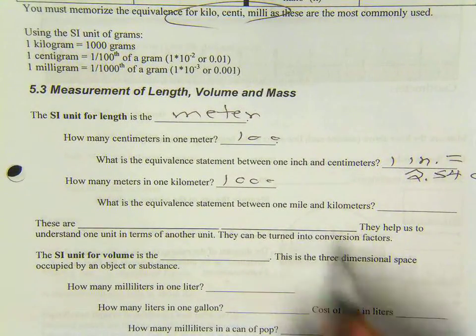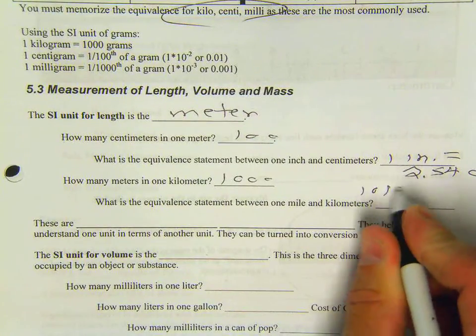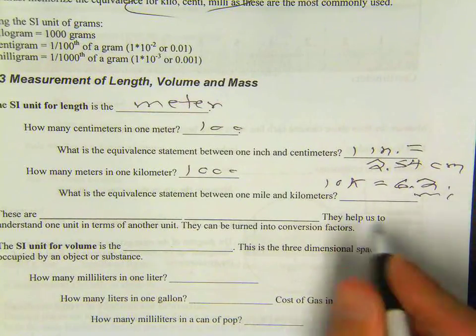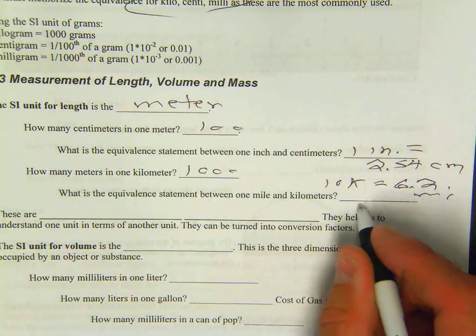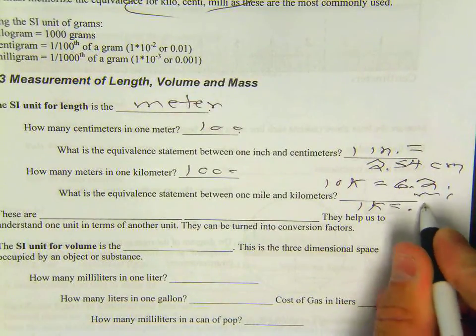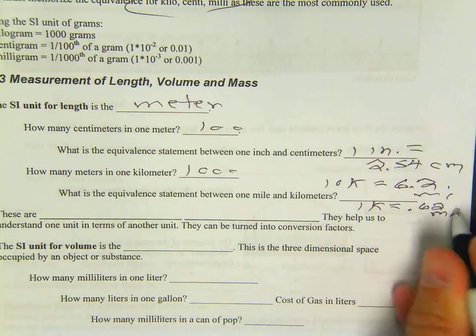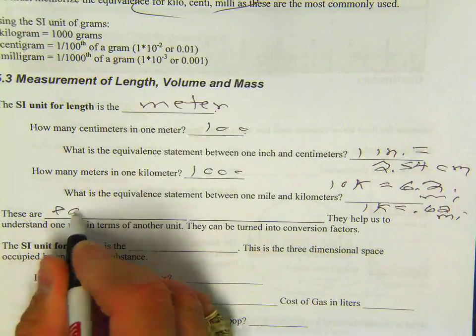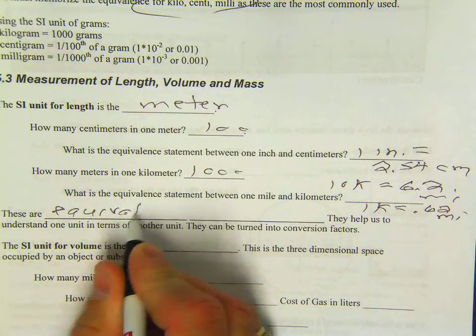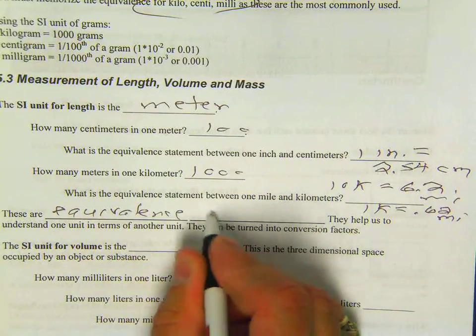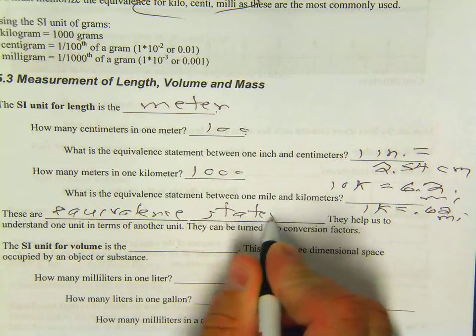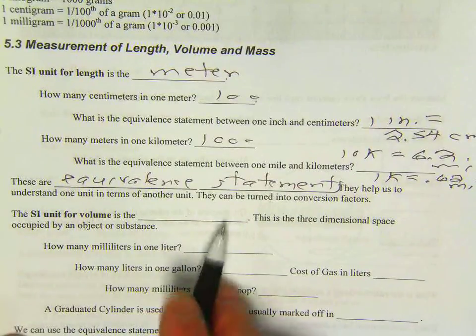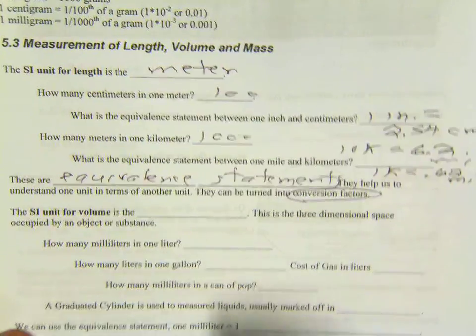An equivalent statement between mile and kilometers, I'm going to say 10K equals 6.2 miles. So if I divide that through, 1K equals .62 miles. These are equivalent statements, and we'll see later on where these are used with converting and conversion factors for unit analysis, which is real important.